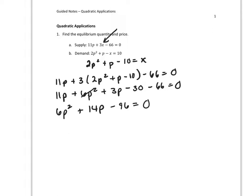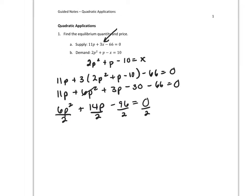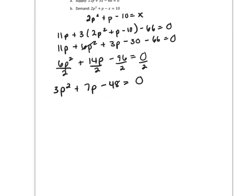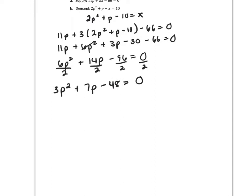Now I see that I can divide every term on both sides by 2 to make my coefficients smaller. That will give me 3P squared plus 7P minus 48 equals 0. And I believe that will factor, but if you can't get it to factor, use the quadratic formula.